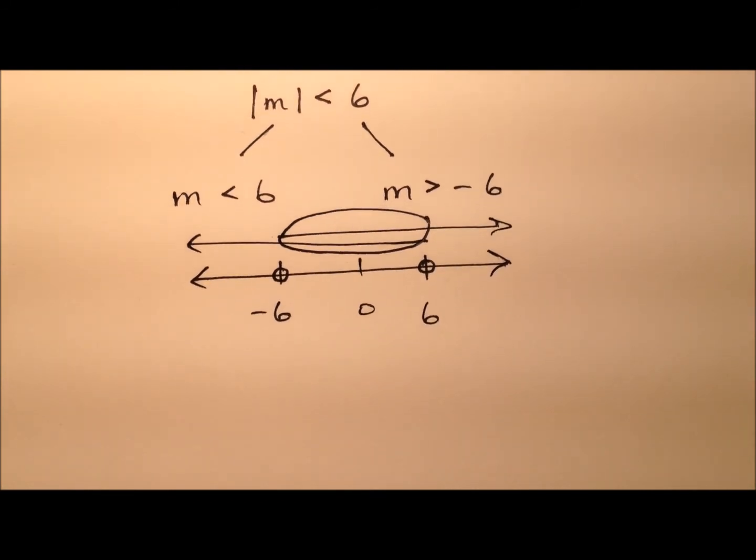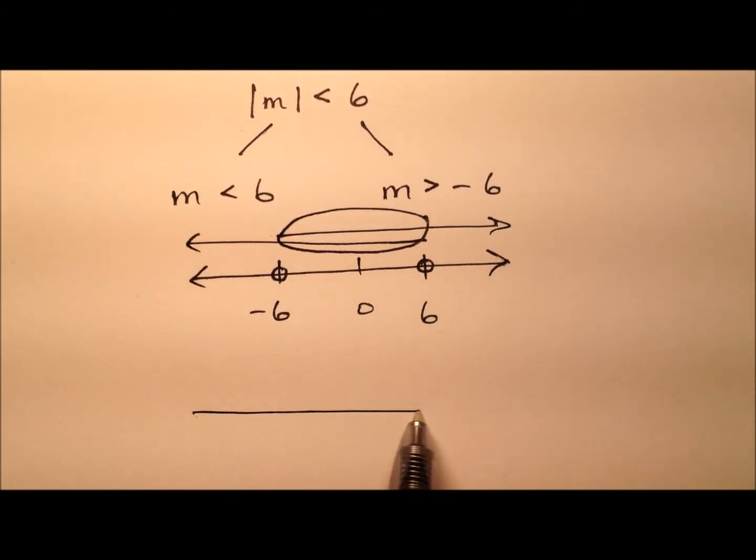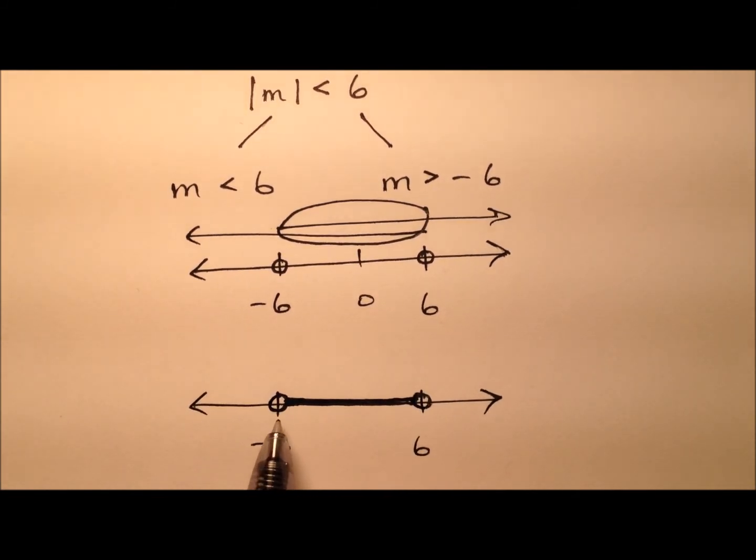And that's actually going to be the solution to my inequality. So let's graph just that overlapped region. Right here, we have open circles at negative 6 and positive 6, and a line going to connect those two.